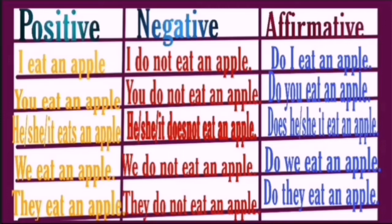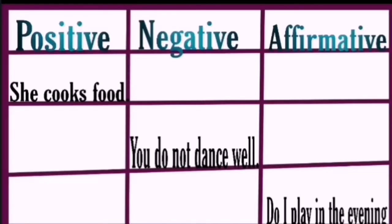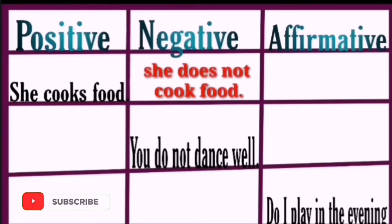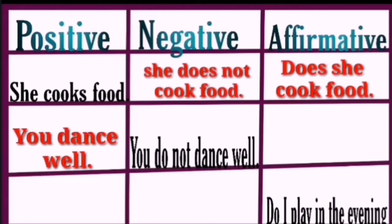'We eat an apple' → 'We do not eat an apple' → 'Do we eat an apple?' 'They eat an apple' → 'They do not eat an apple' → 'Do they eat an apple?' Only with he, she, or it do we use 'does'; for all others we use 'do.' I have made a video on the uses of 'do' and 'does' — the link is in the description box.